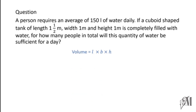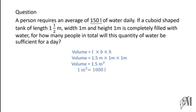Volume = length × breadth × height. Length is 1.5 meters, breadth and height are 1 meter each. Multiplying gives 1.5 cubic meters. This must be converted to liters because the requirement is given in liters. Since 1 cubic meter equals 1000 liters, 1.5 cubic meters equals 1500 liters.